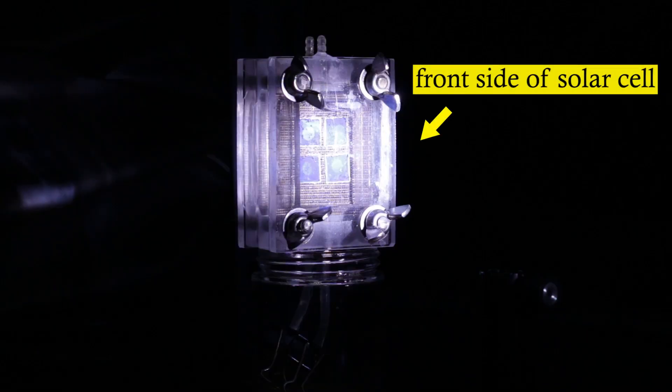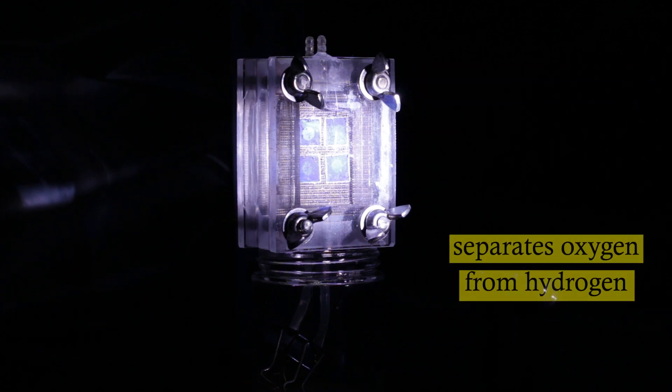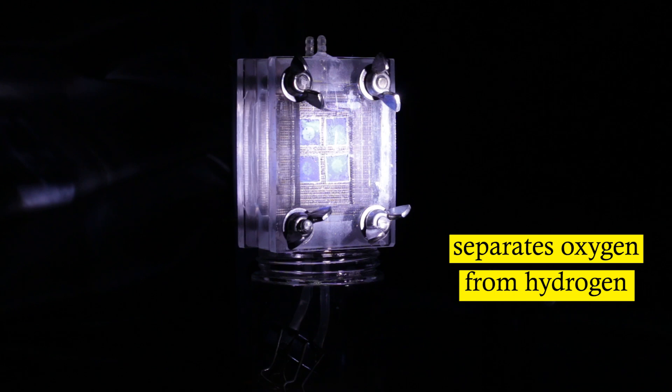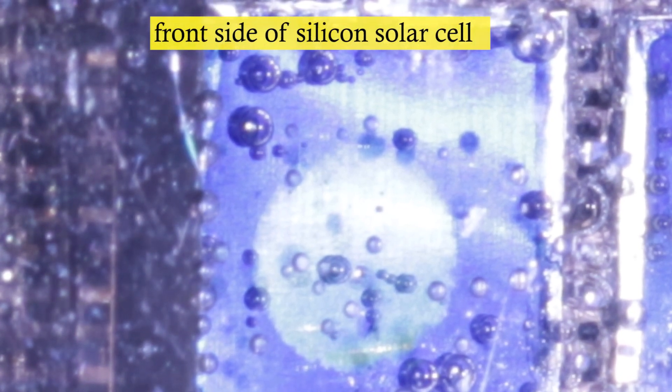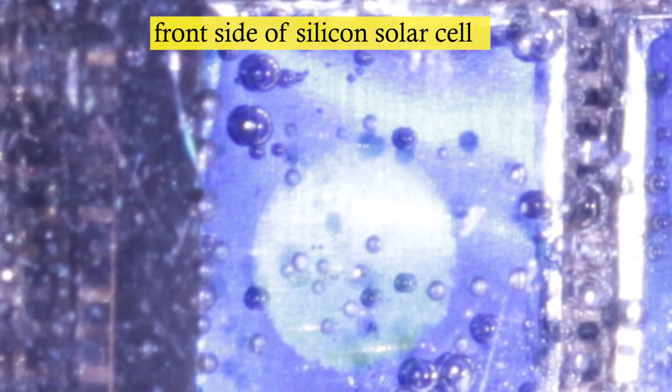The front side of the solar cells, the light-absorbing side, completes the reaction by producing oxygen. Our proprietary membrane assembly safely and efficiently separates the oxygen from the hydrogen and releases the oxygen safely into the air. The close-up view on the front side of the prototype device shows the micro bubbles of oxygen being produced.